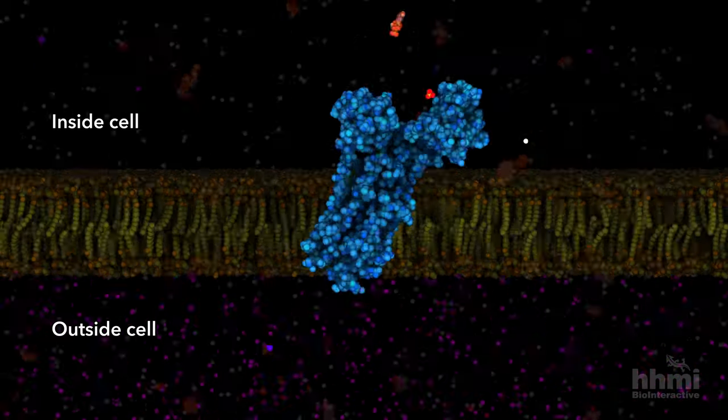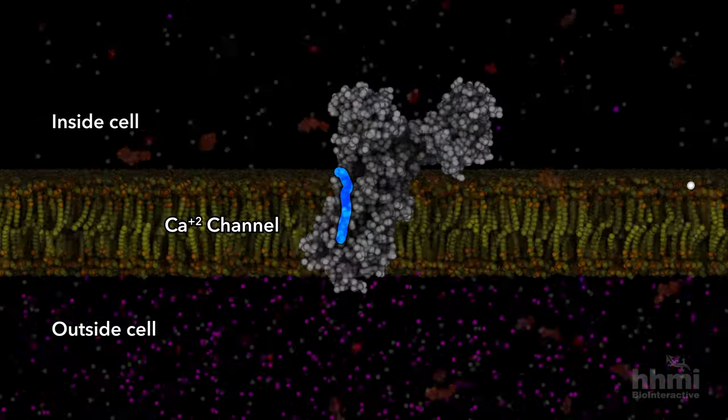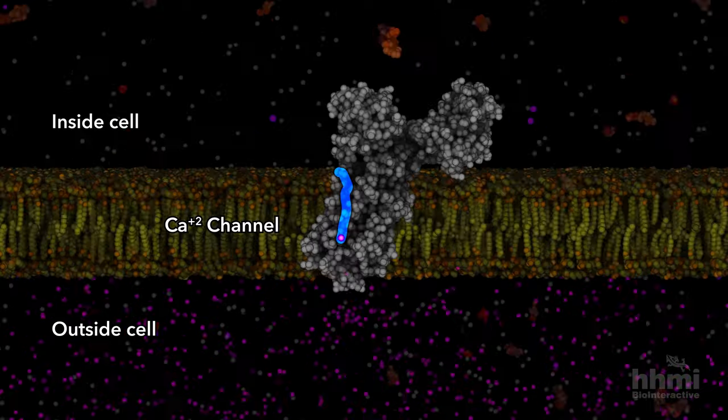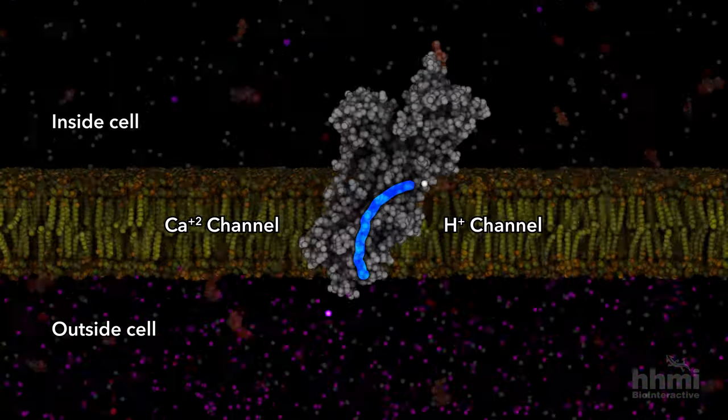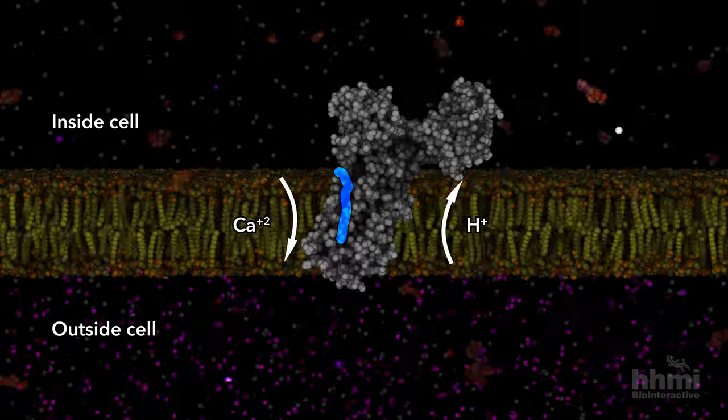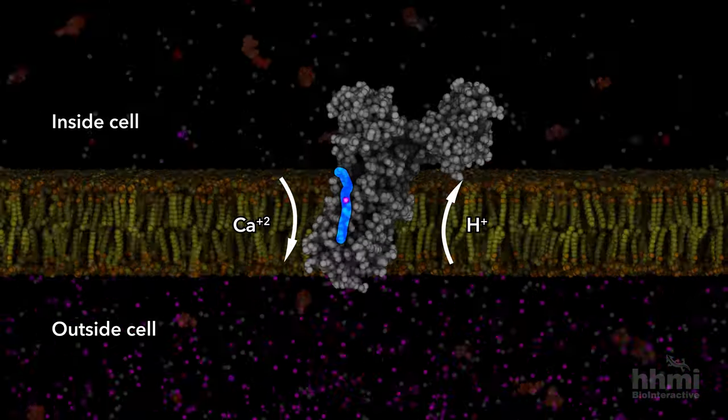With each transformation, channels inside the enzyme open and close, sending ions in opposite directions: hydrogen in and calcium out of the cell.